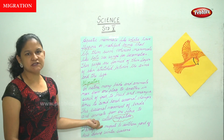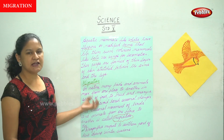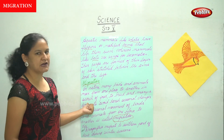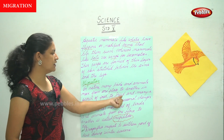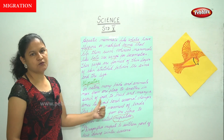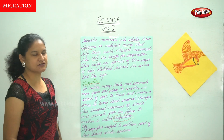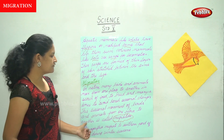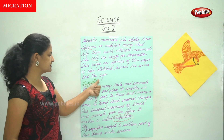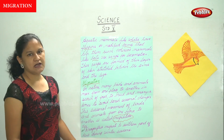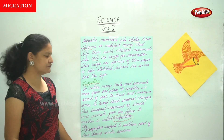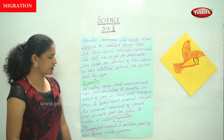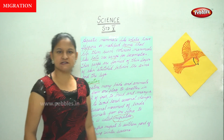Moving on to migration — in nature, birds and animals move from one place to another in search of food, to breed, and many times to avoid harsh seasonal changes. This seasonal movement of birds and animals from one place to another is called migration. An example is dragonflies that migrate to the southern parts of Asia to avoid the winter season.